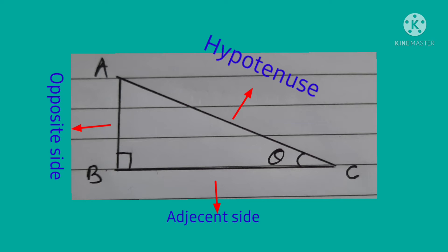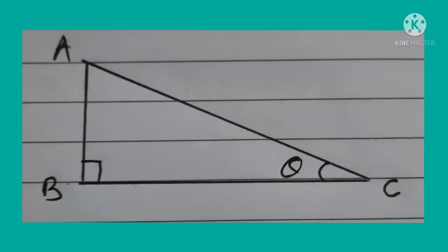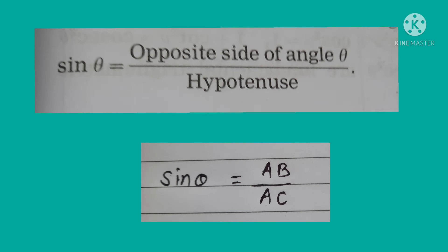Now we are going to study how to write the trigonometric ratios. For every ratio, consider two sides of the given triangle out of three sides. For the first ratio, consider opposite side AB and hypotenuse AC. By using the opposite side and hypotenuse, we can write the first trigonometric ratio: sin theta is equal to opposite side upon hypotenuse. Symbolically, sin theta equals AB upon AC.